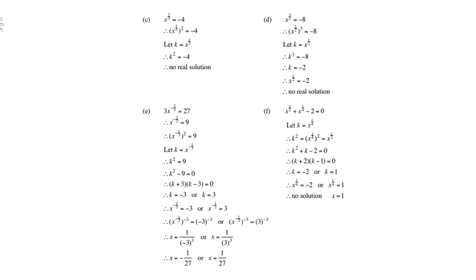D: x to the power of three over two equals negative eight. Split three over two and let k equal x to the power of a half. Then k cubed equals negative eight. This step is allowed because the cube root of negative eight is negative two. However, be careful — if we reintroduce negative two, then x to the power of a half equals negative two, which involves an even exponent equalling a negative number. Therefore, no real solutions.